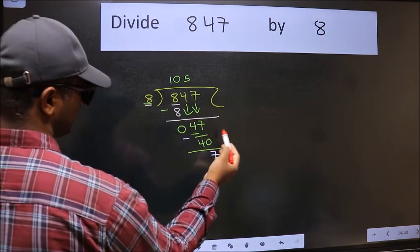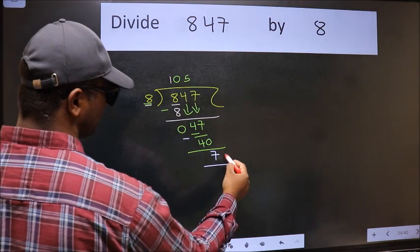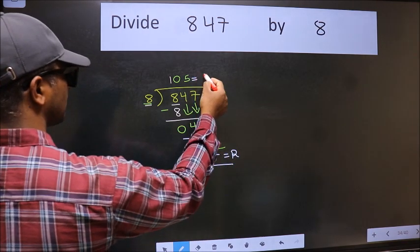No more numbers to bring it down. So we stop here. This is our remainder and this is our quotient.